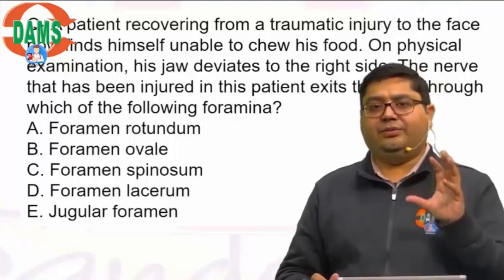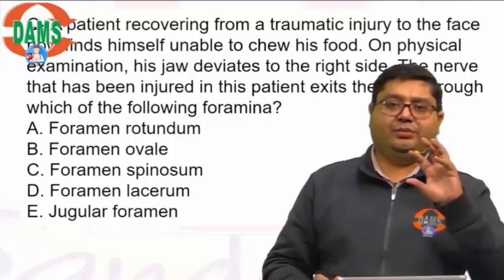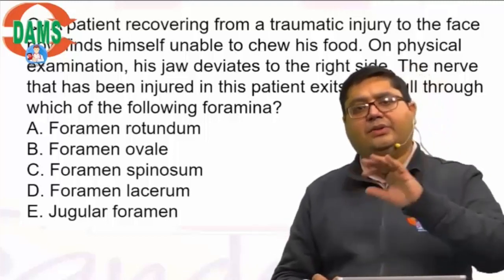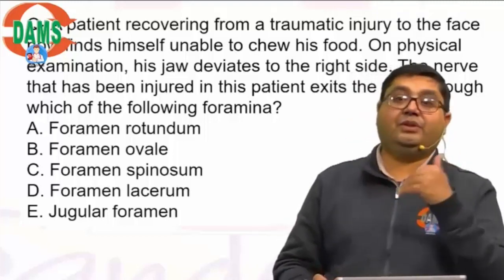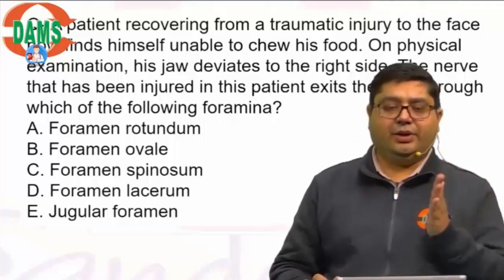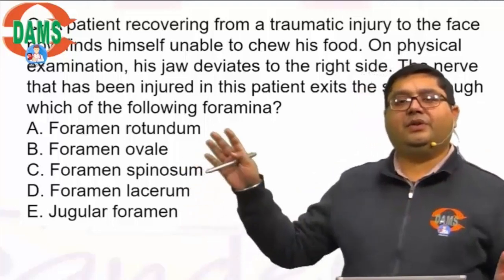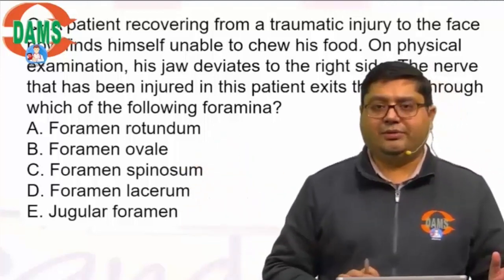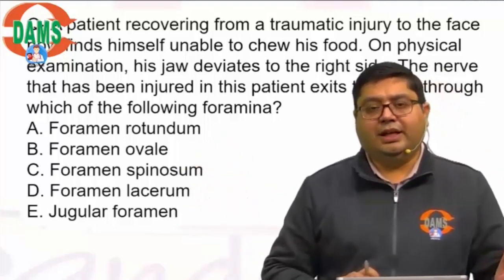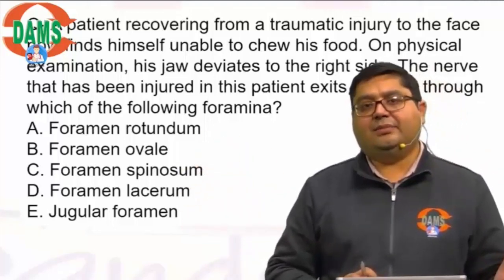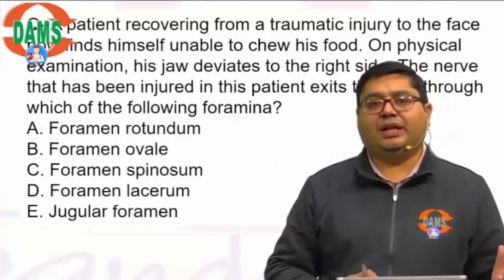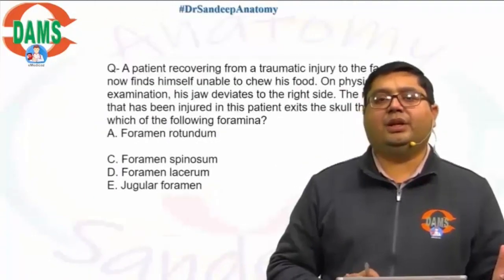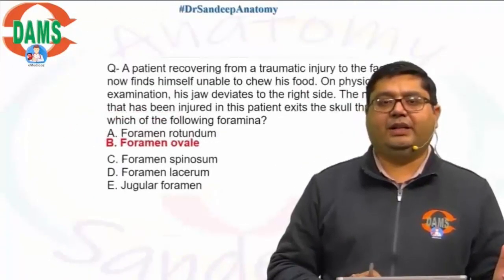Once you have identified the motor loss and sensory loss, accordingly you have to think which nerve is involved, and accordingly, which foramen is suitable for that particular nerve. In this case, we can say the mandibular nerve is involved. That is why the answer to this question should be foramen ovale.